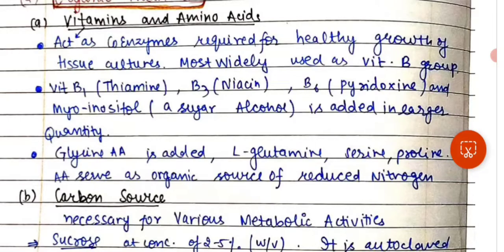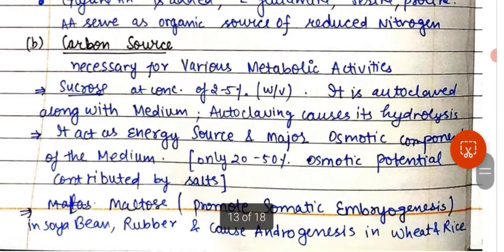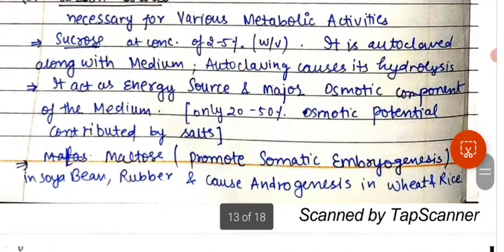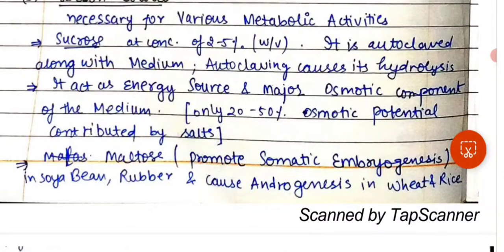Amino acids serve as an organic source of reduced nitrogen. The carbon source is necessary for various metabolic activities. Sucrose at a concentration of 2 to 5% is autoclaved along with the medium; autoclaving causes its hydrolysis — sucrose is broken down into glucose and fructose. It acts as a source of energy and a major osmotic component of the medium, with only 20 to 50% of osmotic potential contributed by salts. Maltose promotes somatic embryogenesis in soybean and rubber, and endogenesis in wheat and rice.